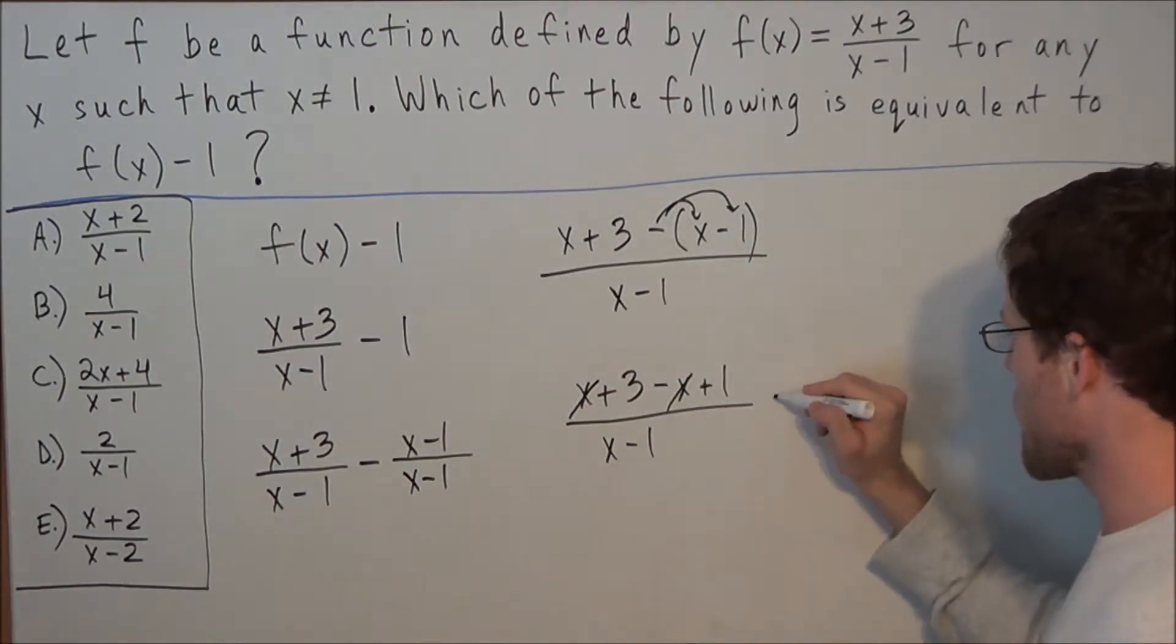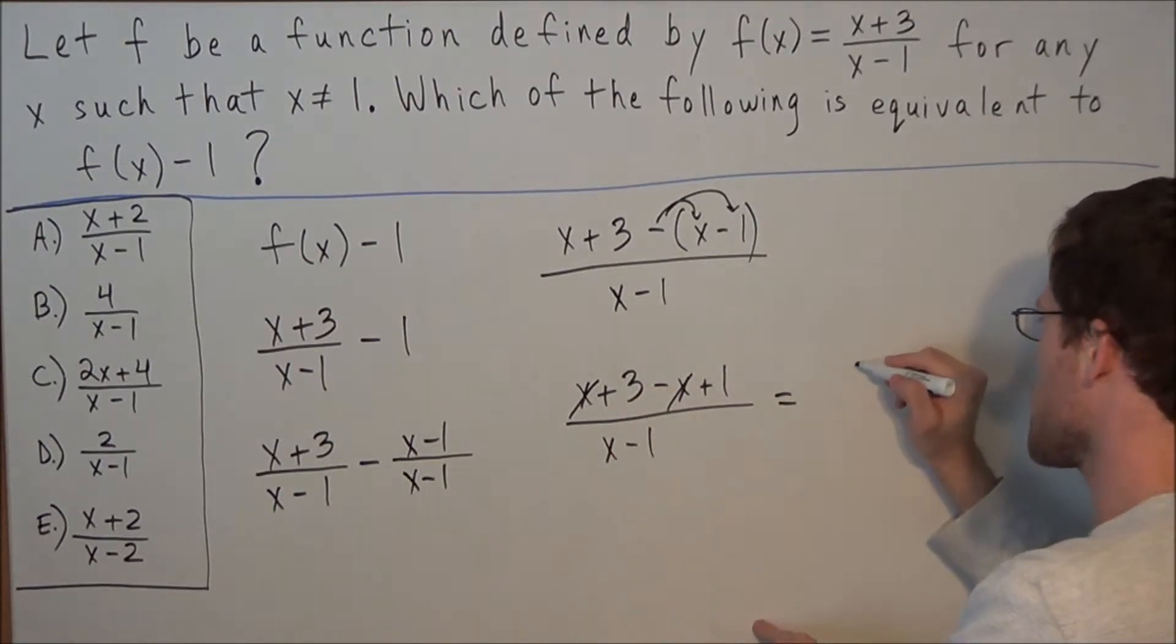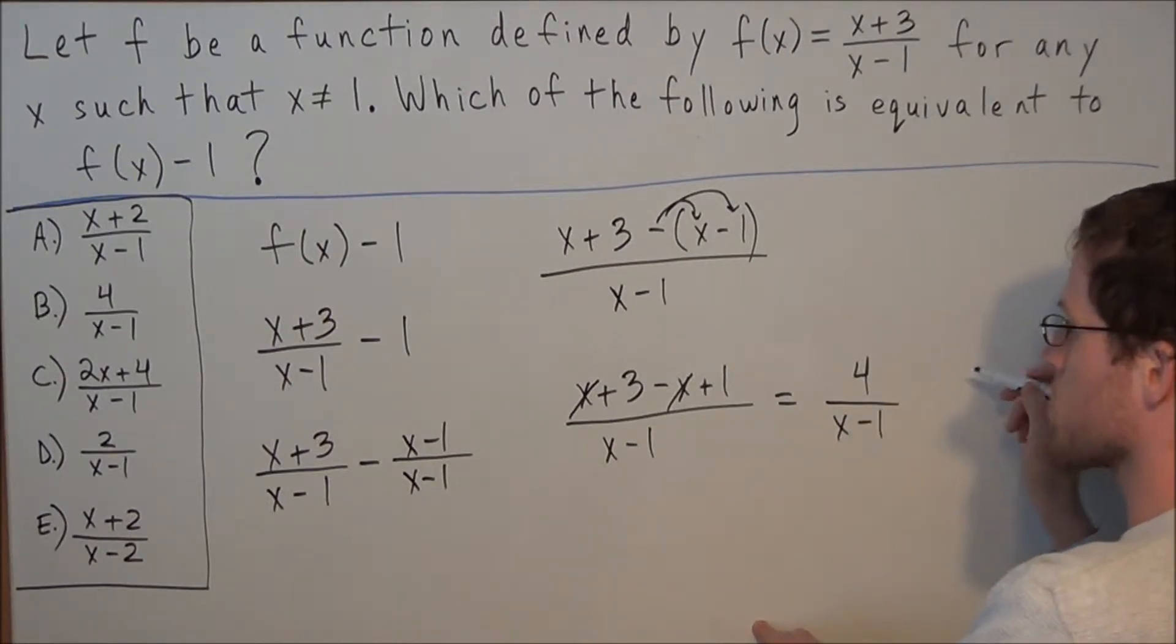Now for the final answer, in the numerator we have a positive 3 and a positive 1, which gives us positive 4 over x minus 1. So for this problem, our answer is 4 over x minus 1.